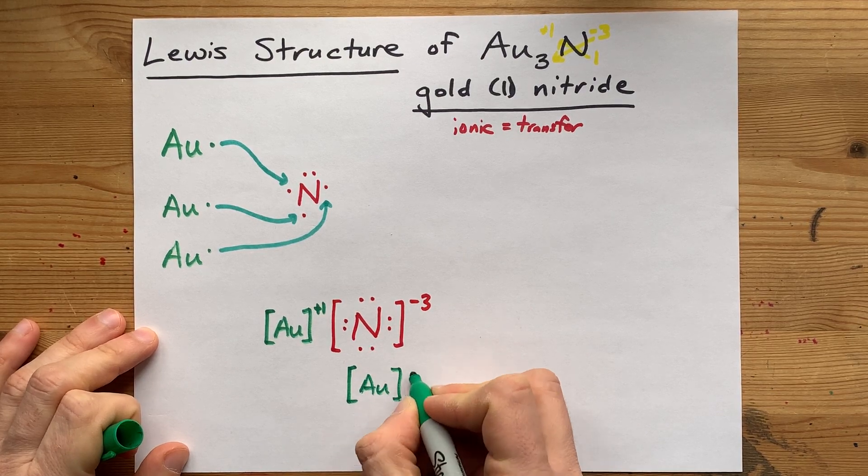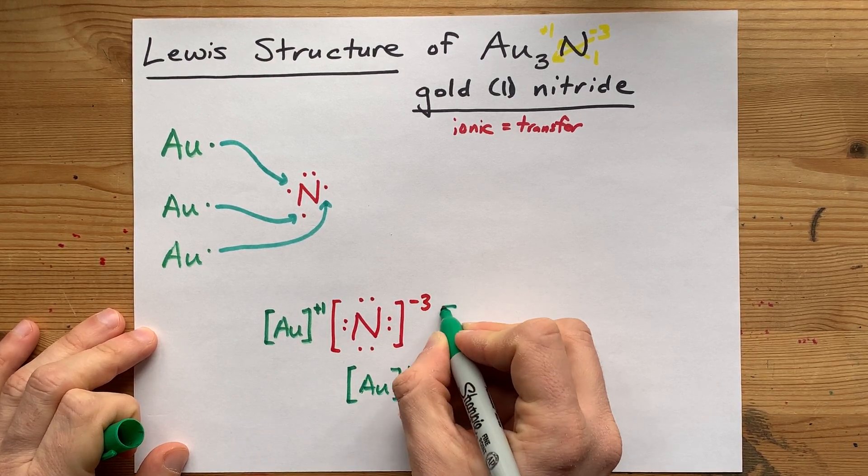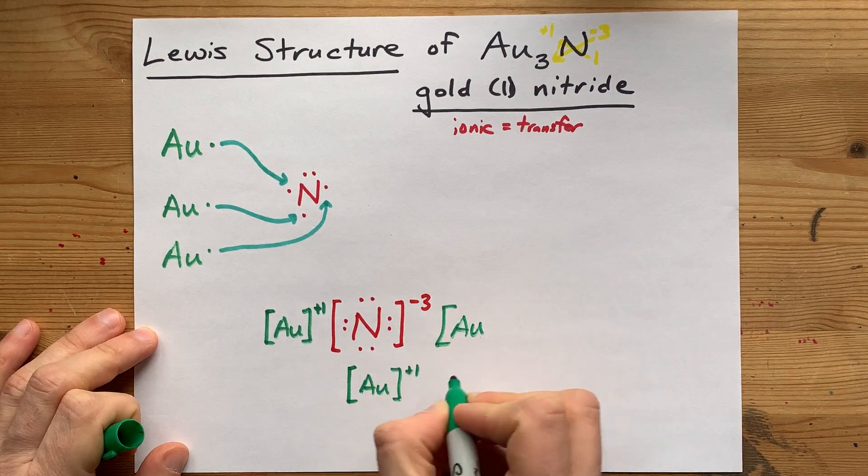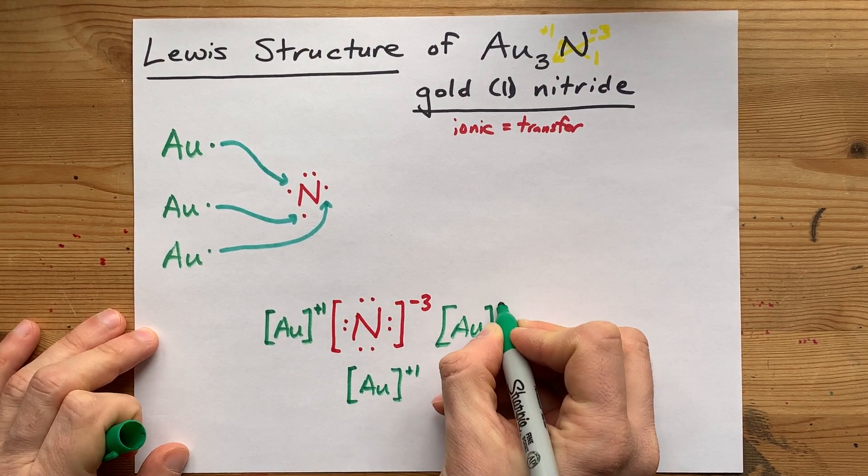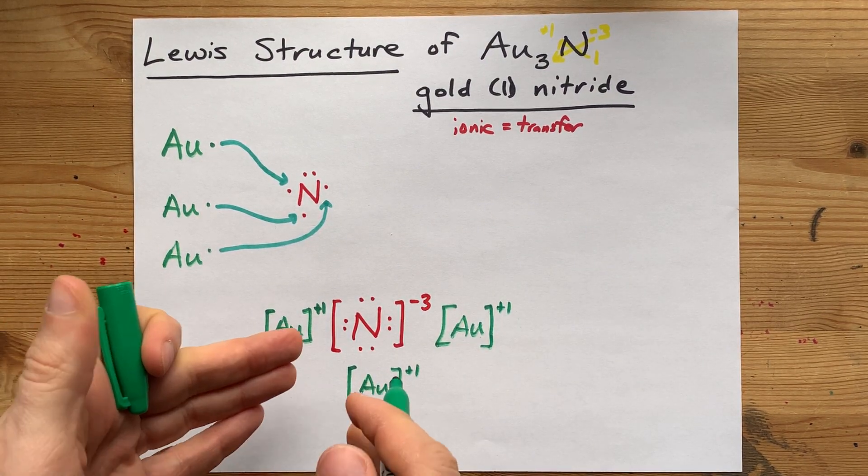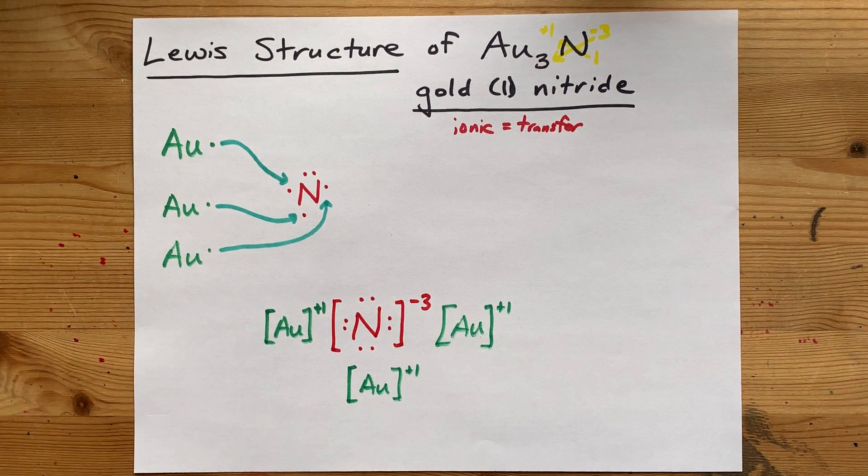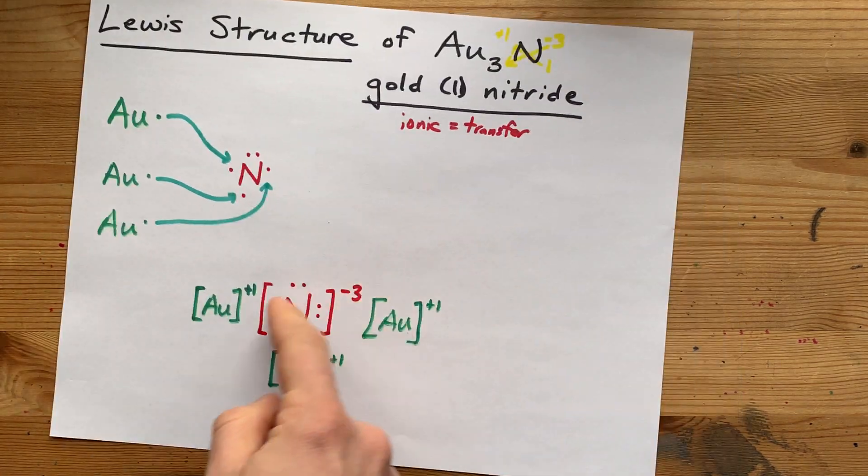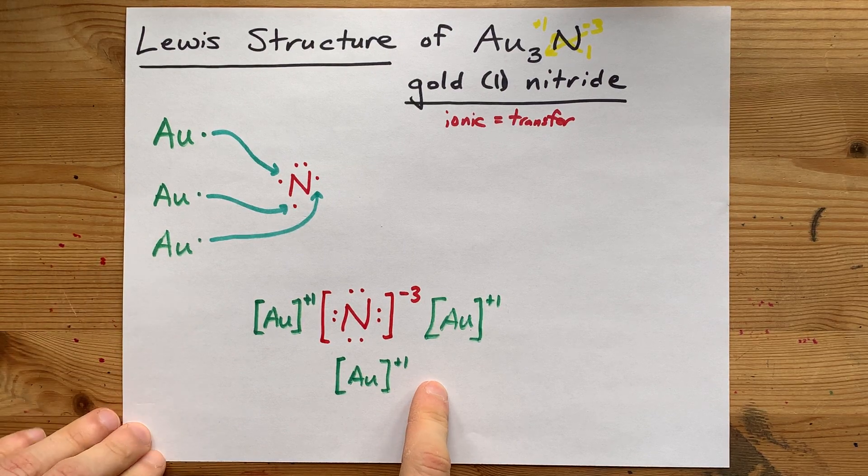Now, you need to draw that three times because it happened to three separate gold atoms, like spreading them around the nitrogen, because the positive charges would repel each other. Here's your completed Lewis structure for gold one nitride.